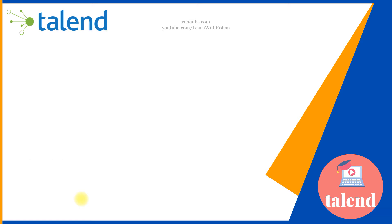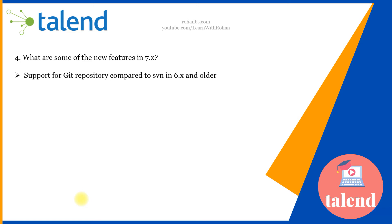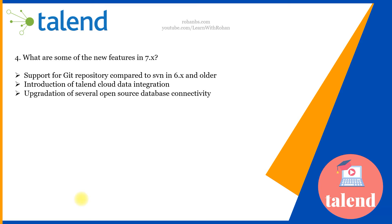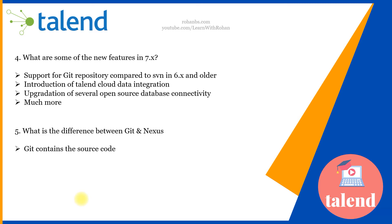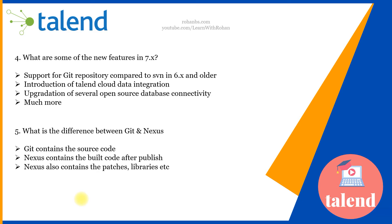The fourth question is: what are some of the new features in 7.0? Compared to older versions like 6.x, which only supported SVN, from version 7 onwards Talend started supporting Git repository for version control. They also introduced Talend Cloud Data Integration software, upgraded several open source database connectivities, added support for the latest versions of big data technologies, and introduced many cloud-related features available in 7.x.